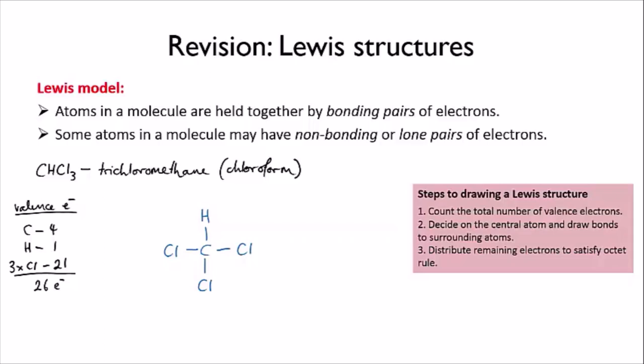Hydrogen now has a full outer shell. Being in the first period, it only needs two electrons to get a full outer shell, so I can't put any lone pairs on it.